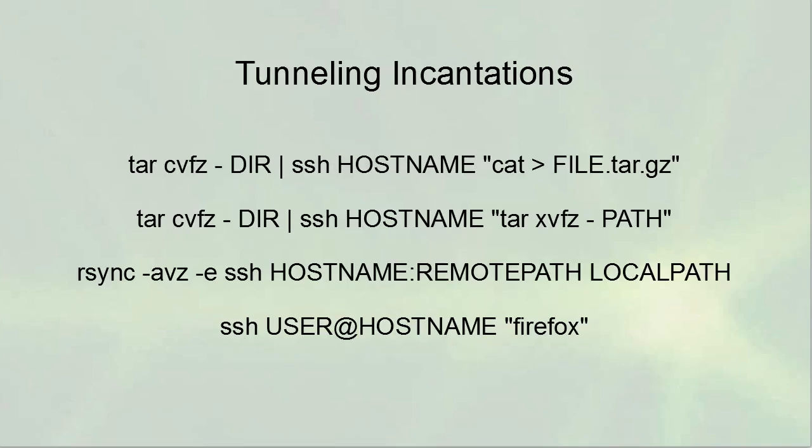SSH also supports tunneling. For example, the tar command can create an archive sent to standard out, which is then piped into an SSH command that uses cat on the remote end to redirect it into a file — effectively creating a tar archive that lands directly on the remote machine. These are advanced incantations that illustrate some of what SSH can do.